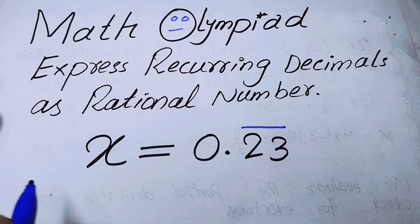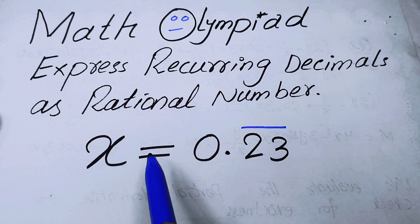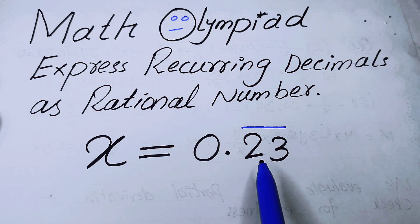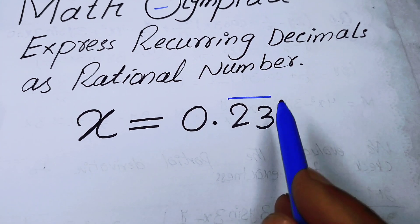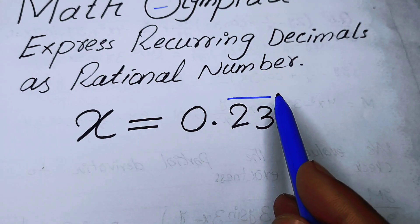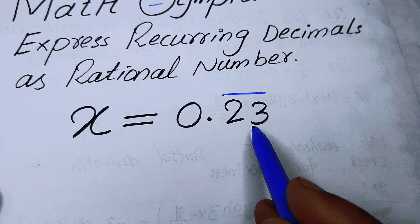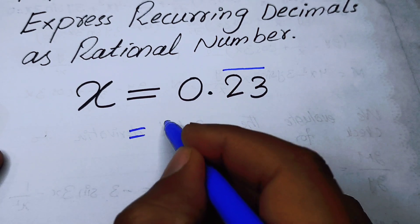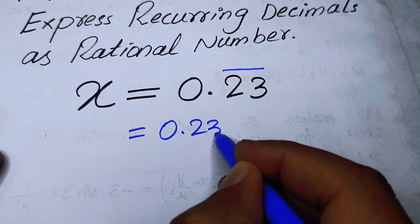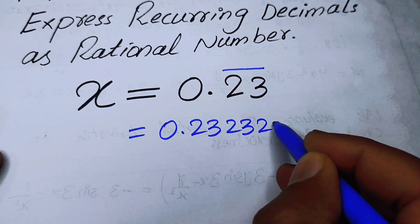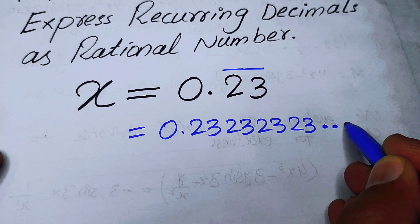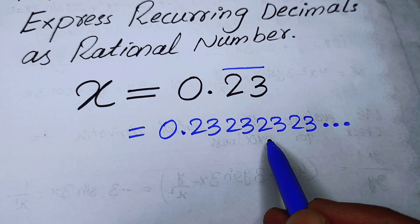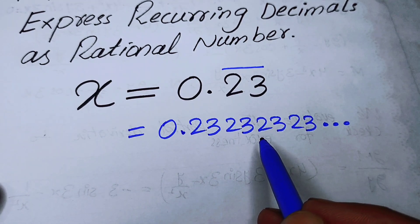Hello everyone. In this video we are going to express a recurring decimal as a rational number. Here we have the recurring decimal 0.23 bar, where the bar represents that 23 is repeated indefinitely — so we can write this as 0.2323232323... and so on.